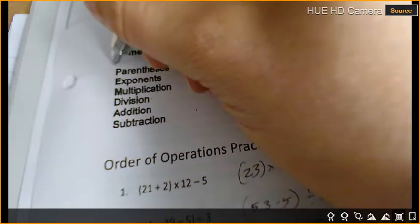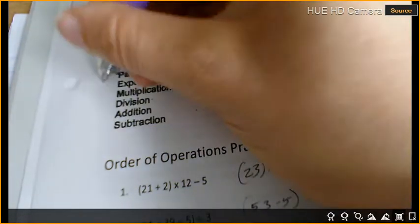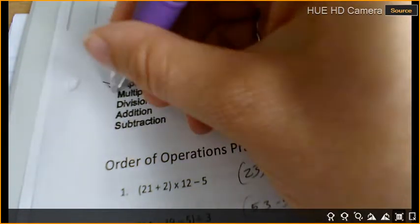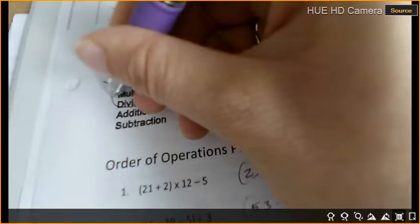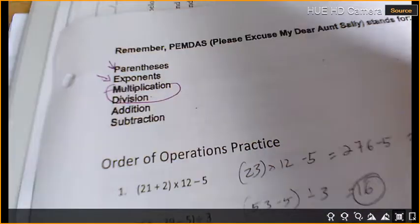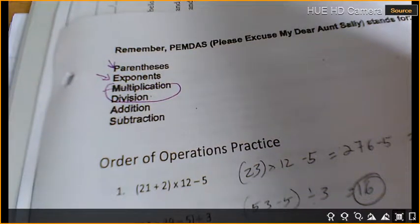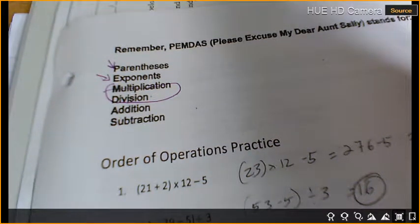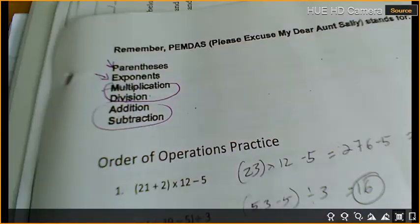You're going to do first all the parentheses, then all the exponents. Multiplication and division, you do in order from left to right. So if division comes before multiplication left to right, you do it first. Addition and subtraction, left to right.